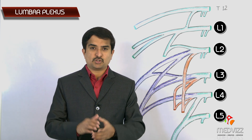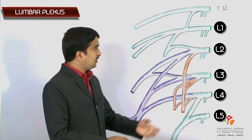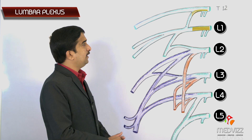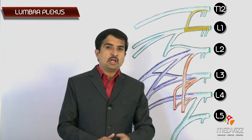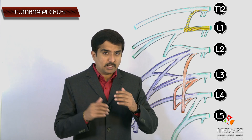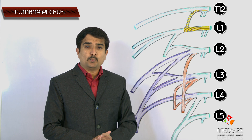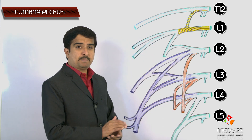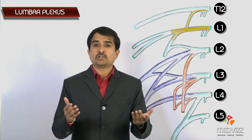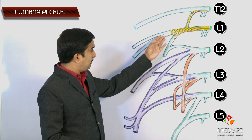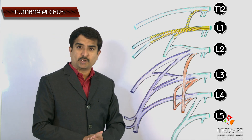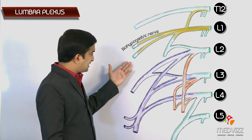Now we shall discuss the various branches given by the lumbar plexus. The ventral ramus of L1 also receives some fibers from the last thoracic nerve, T12. The ventral ramus of L1 is divided into a larger upper branch and a smaller lower branch. The larger upper branch of L1 gives rise to two important nerves: the iliohypogastric nerve and the ilioinguinal nerve.